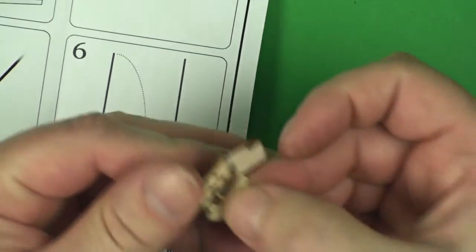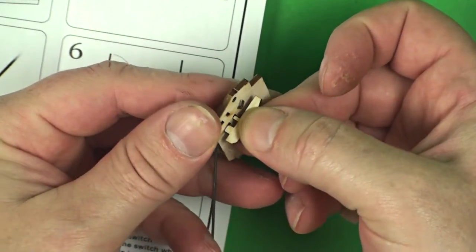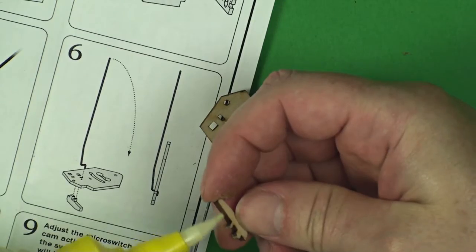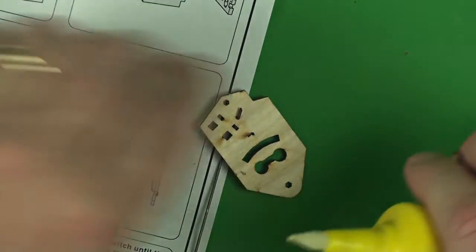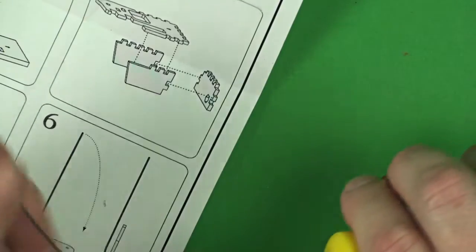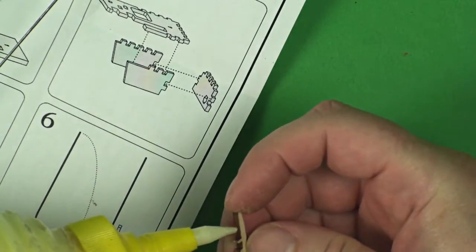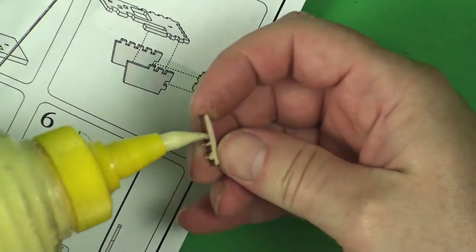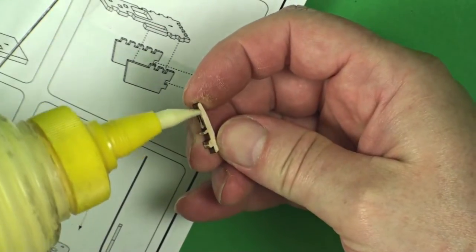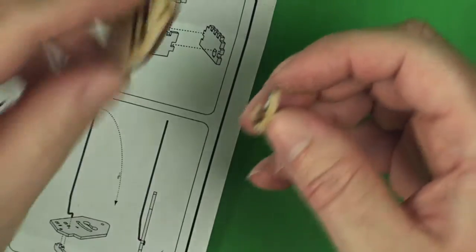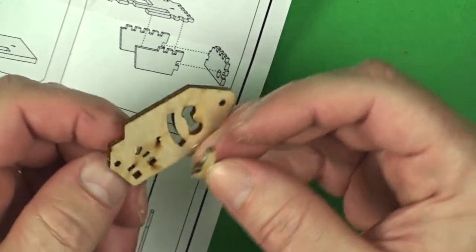And it goes on the back like this and just presses into those little holes. So put a little bit of glue on the bottom here. It doesn't take much because it's a fairly snug fit on here.